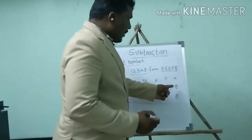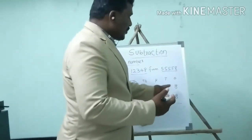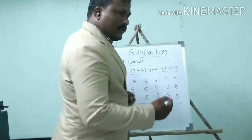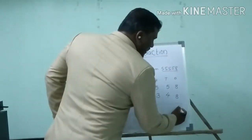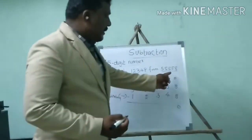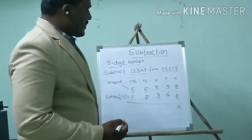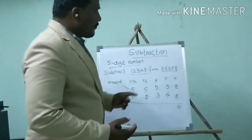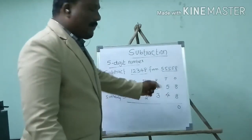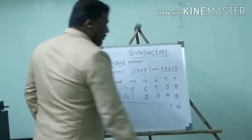Now we will subtract — always starting from right to left. So 8 minus 8 equals 0. First we subtract the ones place. Next, the tens place: 5 minus 4 — minuend is 5, subtrahend is 4 — so 5 minus 4 equals 1. Answer is 1.